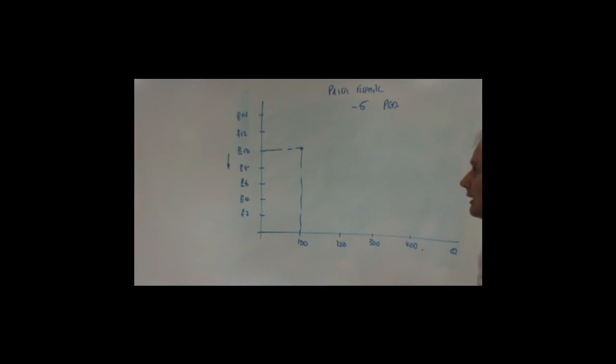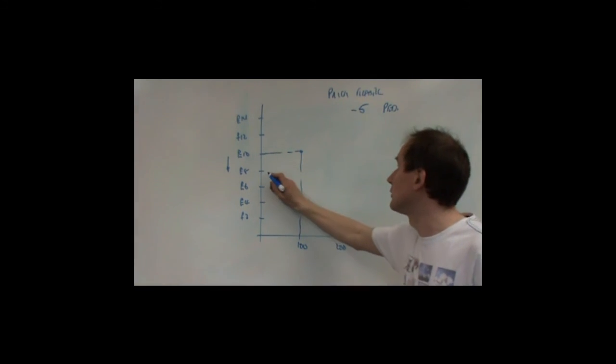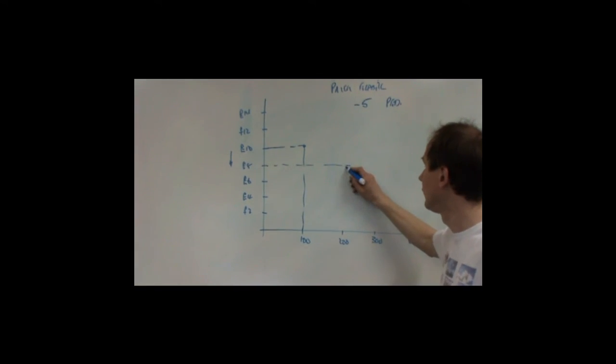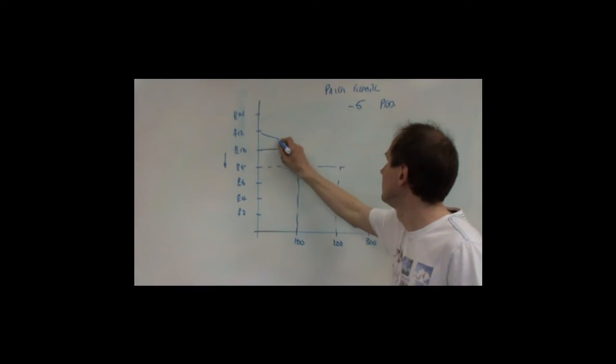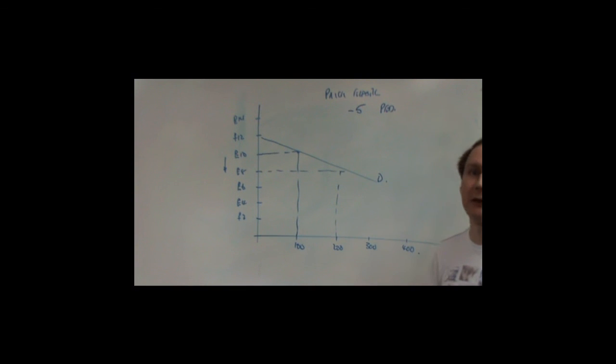So the question is, what's going to happen to demand? And the answer is that demand is going to change by 5 times as much, 100%. So essentially demand is going to double from 100 to 200. So the demand curve is going to look a bit like that.